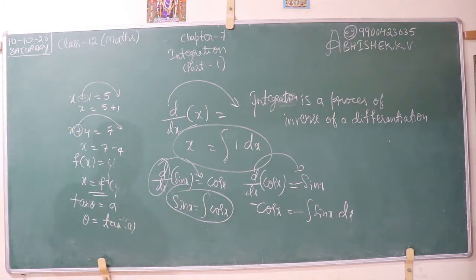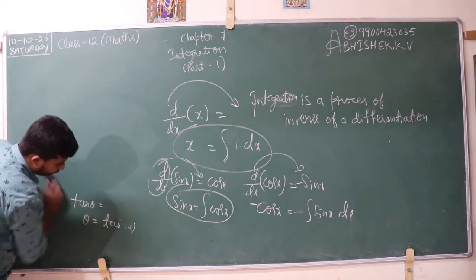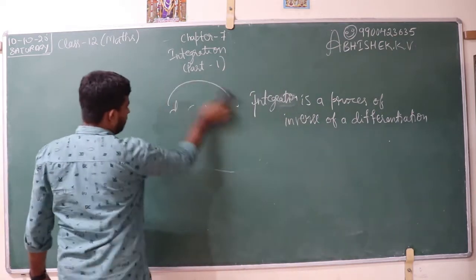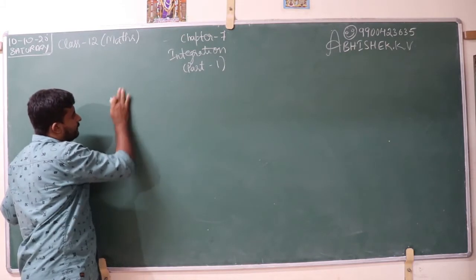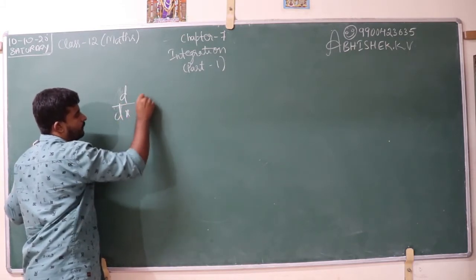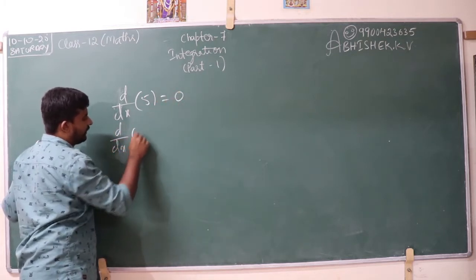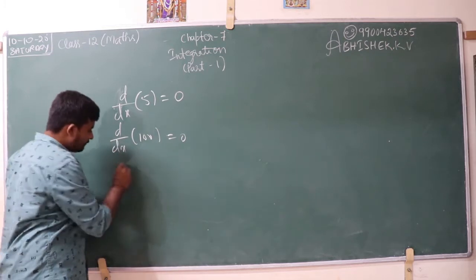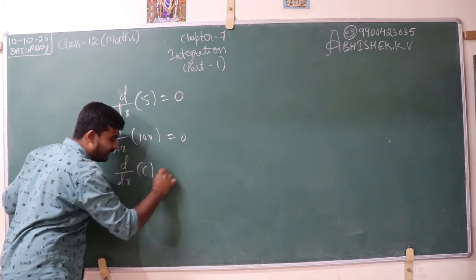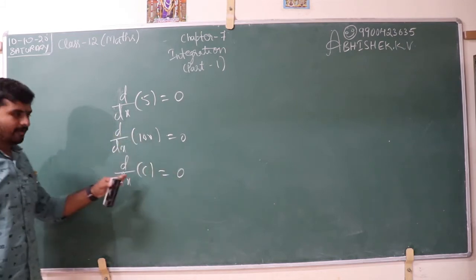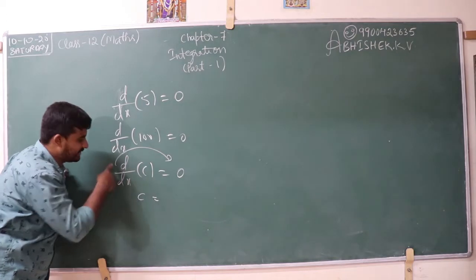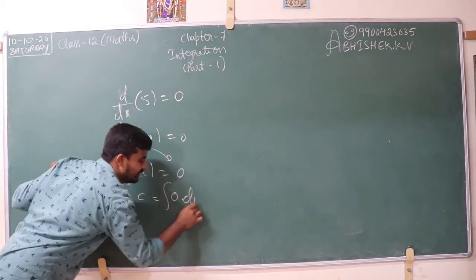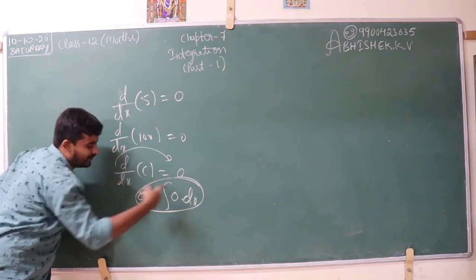We have some more results in integration. We should note another important point: the derivative of a constant is 0. Derivative of any constant equals 0. Therefore, if I transfer this to the LHS, differentiation becomes integration of 0 dx, which equals c. So integration of 0 dx is c. That is why whenever we write the result of an indefinite integral — for example, integration of sin x — it is minus cos x plus c. We should add c.